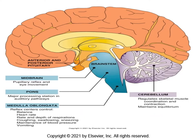Another image shows the midbrain, the pons, the medulla oblongata, and the cerebellum. The midbrain is responsible for pupillary reflexes and eye movement. The pons helps process vestibular and auditory pathways. The medulla oblongata controls balance, heart rate, rate and depth of respirations, cough, swallowing, sneezing, maintenance of blood pressure, and vomiting — those protective functions. The cerebellum coordinates skeletal muscle contraction and equilibrium.